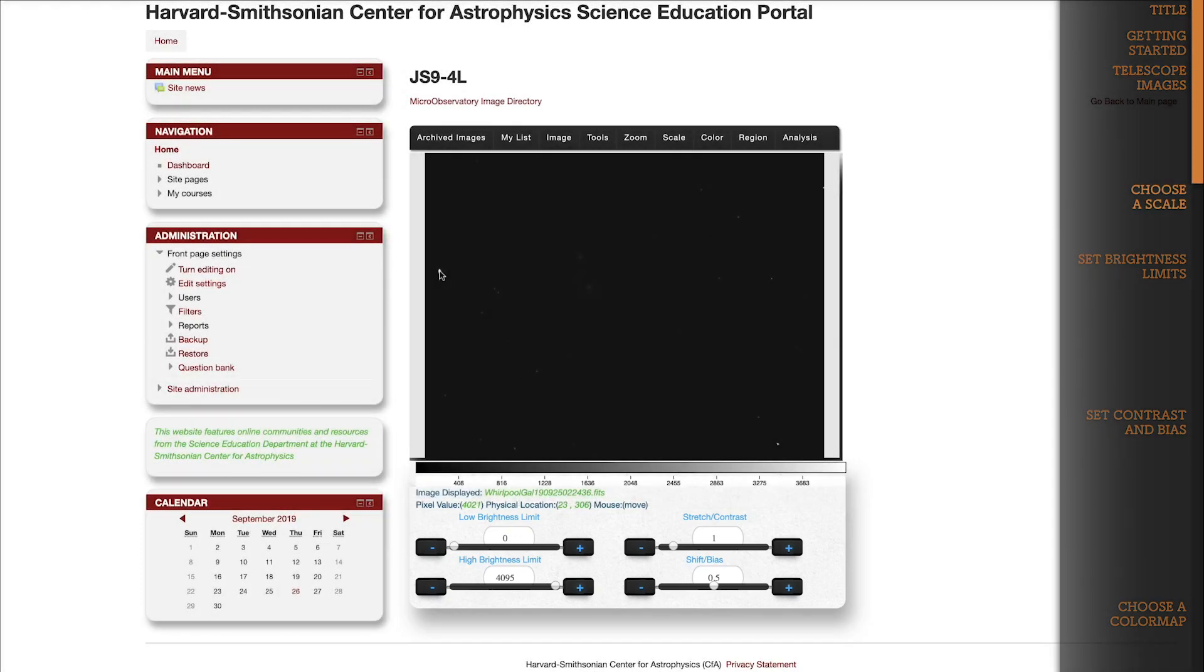But first, I want to talk about scale. At the moment, our image looks almost completely black, which isn't very useful since we can't even tell that the Whirlpool Galaxy is there. We want to know what's happening in all this darkness, so let's bring out the detail. And the first step is choosing an appropriate scale.